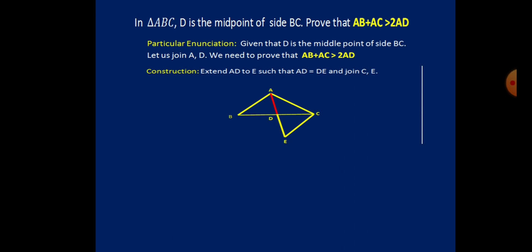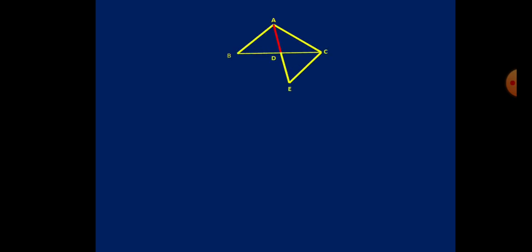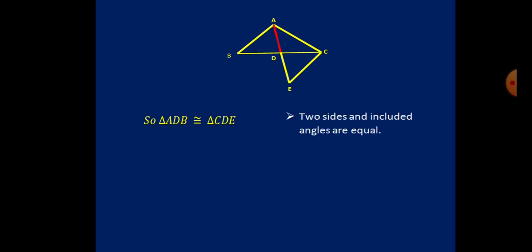For the construction, we connect A with D and produce AD to E such that AD equals DE. In triangles ABD and CDE: AD equals DE by construction; BD equals CD as D is the midpoint; and the included angles ADB and CDE are equal as vertically opposite angles.